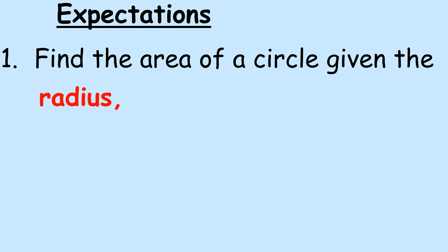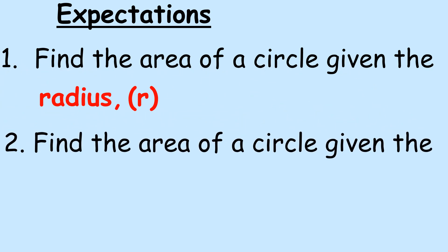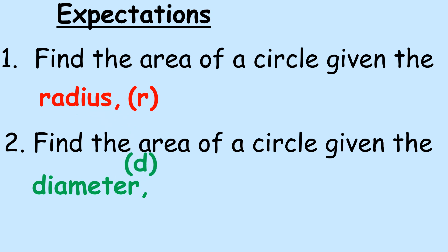What are the general expectations at the end of this video? The first expectation is to be able to find the area of a circle given the radius, and this radius is denoted by r. Secondly, we should be able to find the area of a circle once the diameter is given, and this diameter is represented by the letter d.